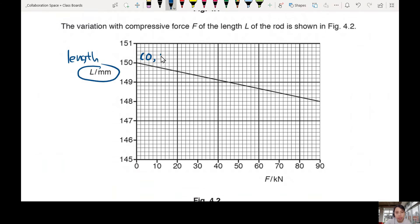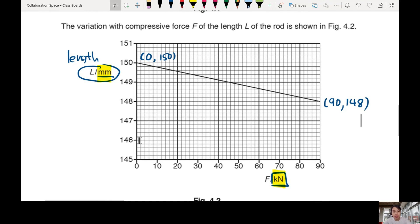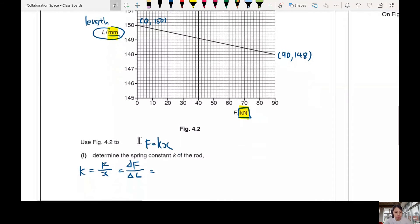It might be a bit hard to see for you guys online. Let's start with the beginning and go to the end. At the beginning, zero force, you have 150mm length. After you squash it, it becomes shorter, 90 kilonewton. If you've got the kilo and the milli, maybe you want to underline that and make note to yourself. Be careful. And this is 148 millimeter. So we use these coordinates, we plug in the values down here.